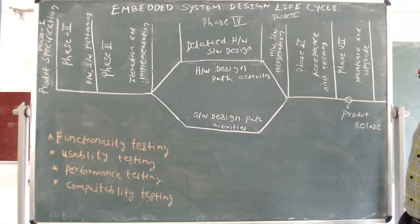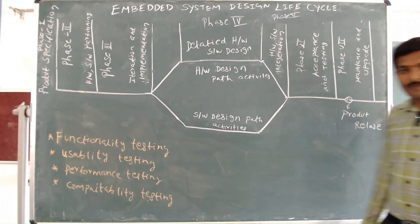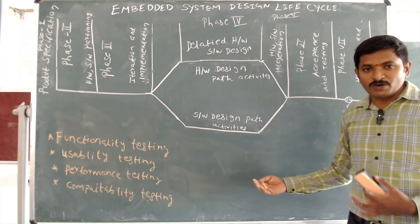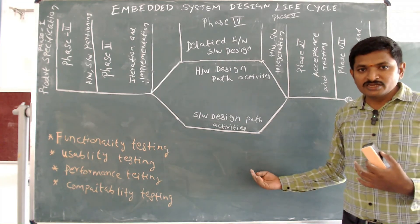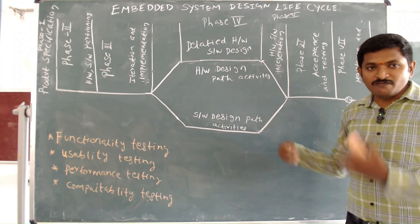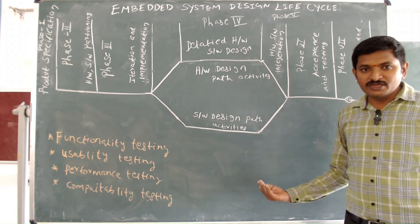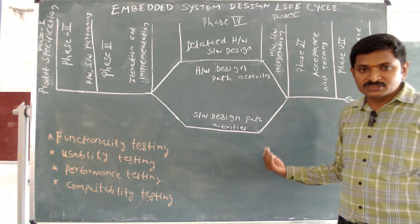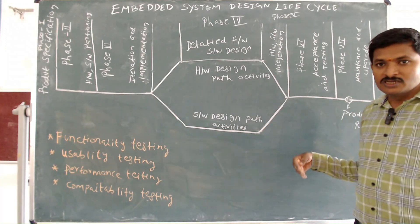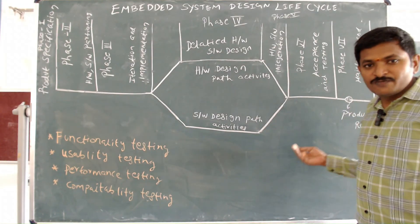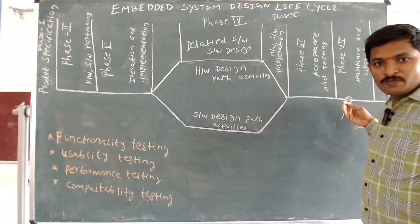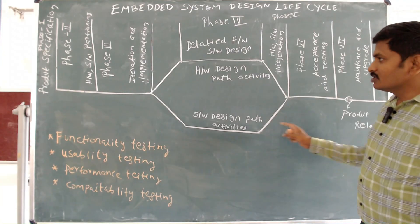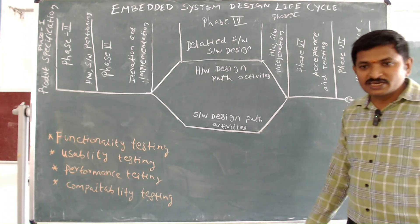Phase seven is maintenance and upgrade — the last stage of the Embedded System Design Life Cycle. After rigorous testing, bugs may still be found. If bugs are found after the product is released, we must update with a new version of software, software patches, and repairs to resolve the issues by providing new software. This is the outline of the Embedded System Design Life Cycle. Thank you.